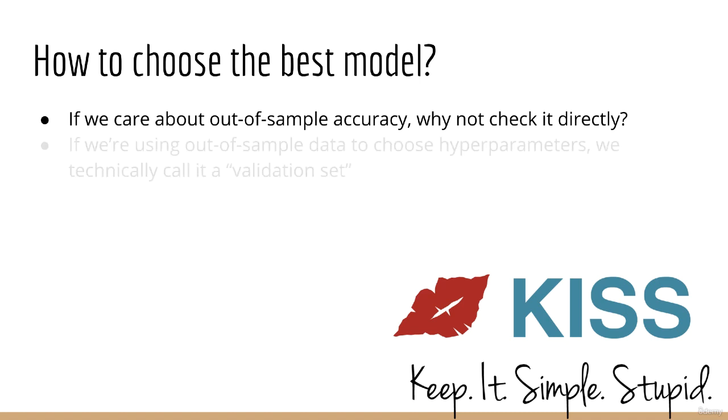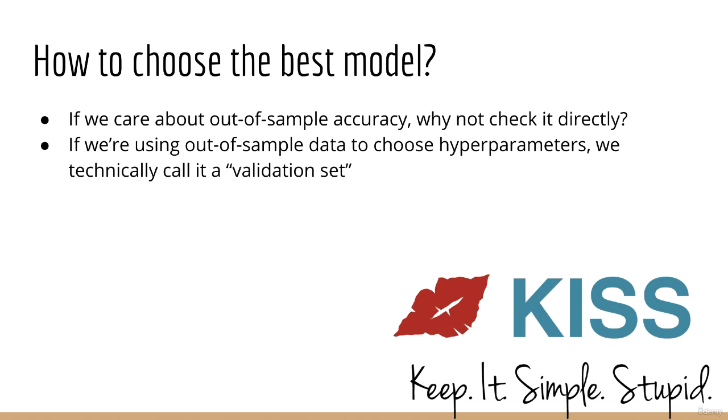In the scenario where we are using out-of-sample data to choose hyperparameters, we would call this the validation set, rather than the test set. You might use methods such as cross-validation to choose your hyperparameters, although that will be a topic for another lecture. So that makes sense when what you care about is good accuracy.